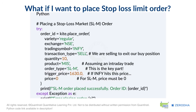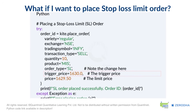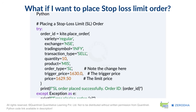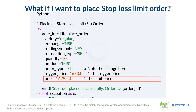Now what if we wanted to place an SL limit order instead? We want to trigger at Rs. 1630, but not sell for less than Rs. 1629.50. The code is very similar — see the difference? Order type is now SL, and the price parameter is set to a limit price of Rs. 1629.50. This creates that small buffer we talked about.